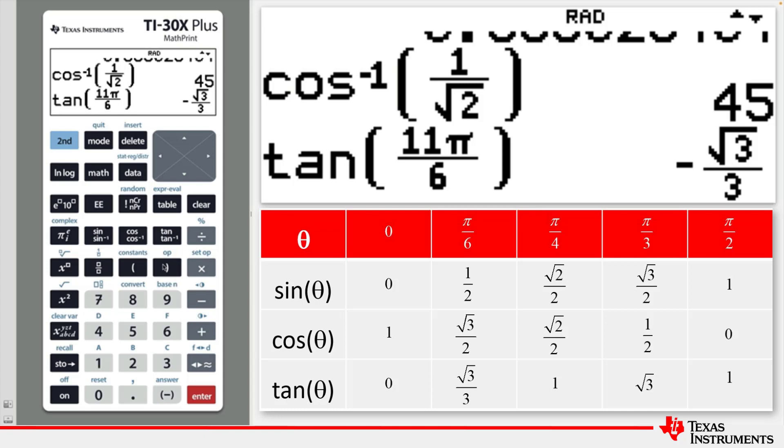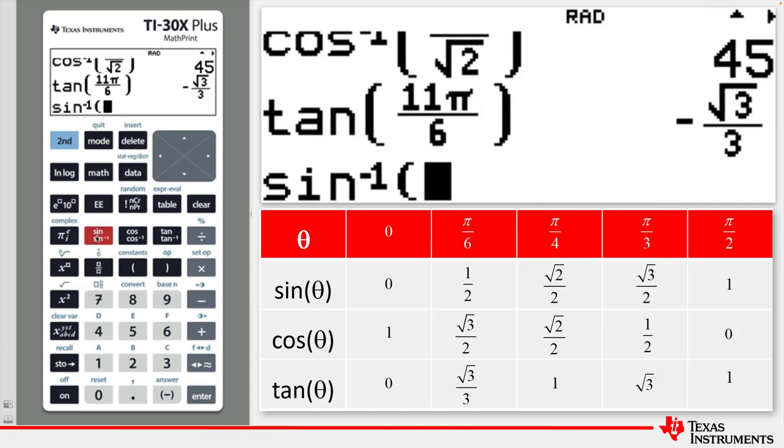let's find the inverse sine of minus square root of 3 over 2. So, sine and then sine again to change to the inverse sine function.